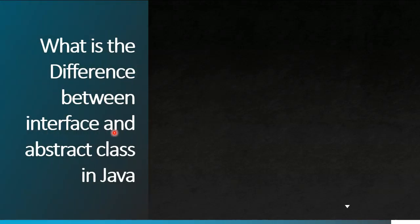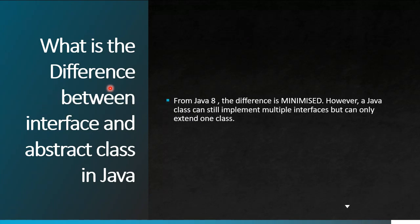The next question is the difference between interface and abstract class in Java. Before Java 8, interfaces could only have abstract methods while abstract classes could have both abstract and concrete methods. With Java 8, that difference has been minimized. However, a class can still extend only one class but implement multiple interfaces. Also, interfaces still cannot have constructors, whereas abstract classes can.